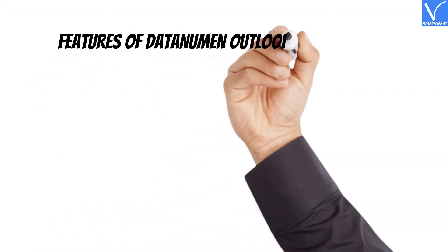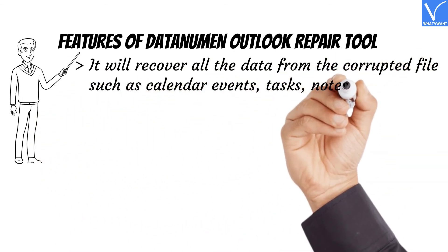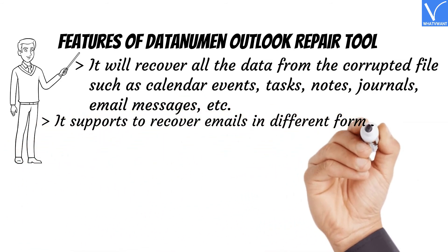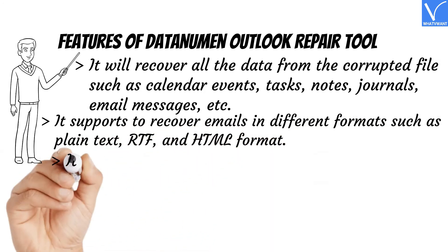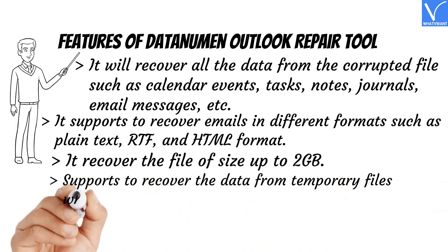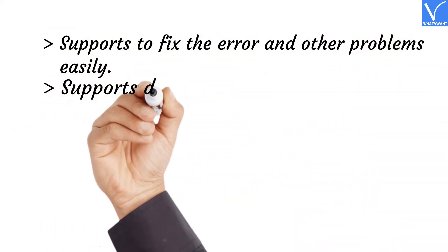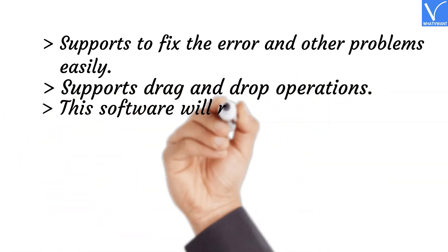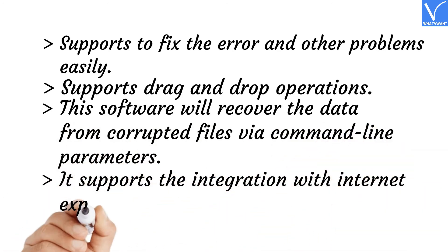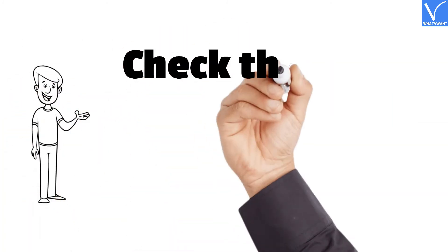Features of Data Neumann Outlook Repair: Recovers all data from corrupted files such as calendar events, tasks, notes, journals, email messages, etc. Supports email recovery in plain text, RTF, and HTML formats. Recovers files up to 2 GB. Supports recovery from temporary files when files encounter unexpected problems. Supports fixing errors and other problems easily. Supports drag and drop operations. Recovers data from corrupted files via command line parameters. Supports integration with Internet Explorer. The price and plans of Data Neumann Outlook Repair are shown on the screen. Check the description for the product link.